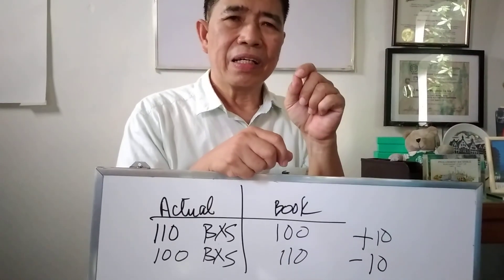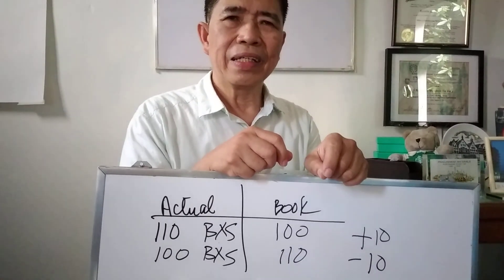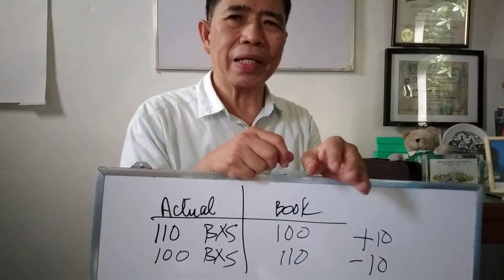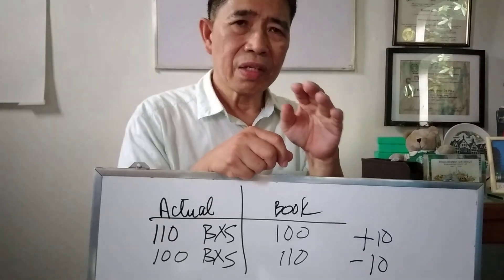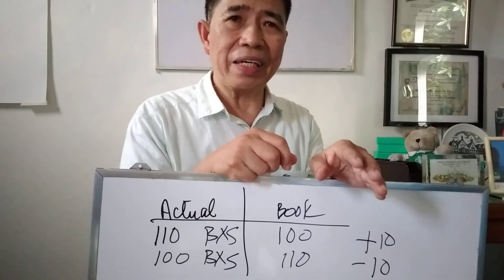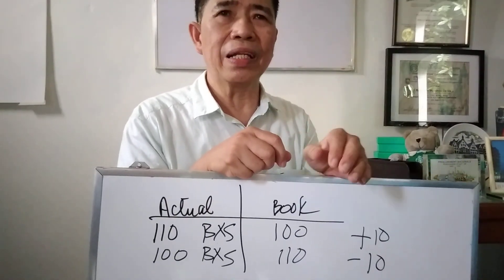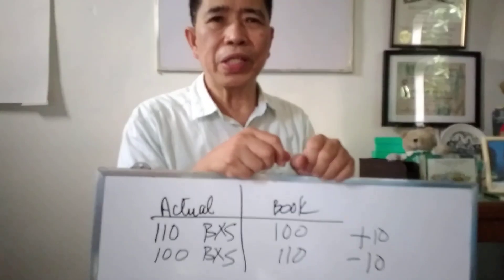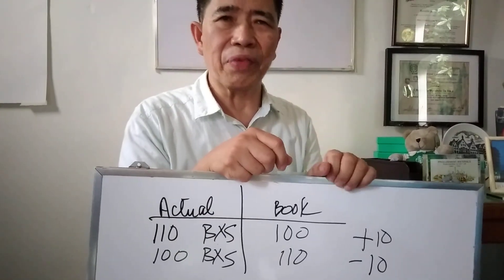Second, cycle count daily. This is continuous and perpetual and can be done per product line or per location. And third, we have to update daily. Before the end of the day, we have to clean our records and reconcile and update all transactions for the day. Tomorrow morning, we can start with zero variance and a healthy operation.